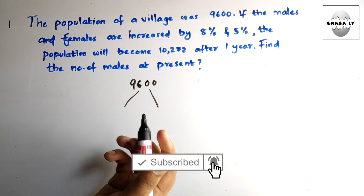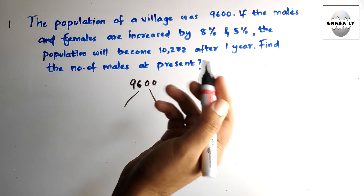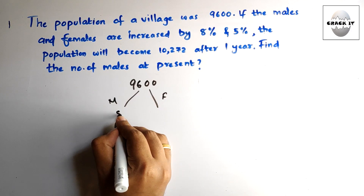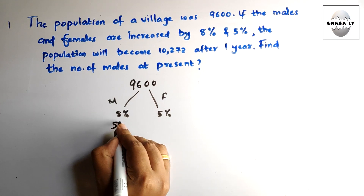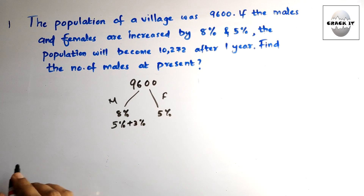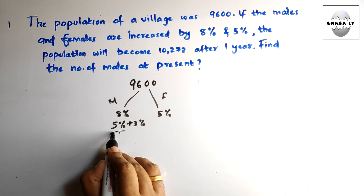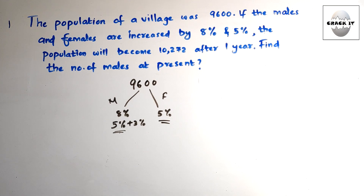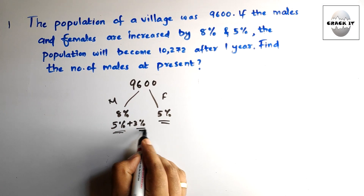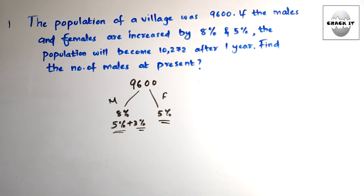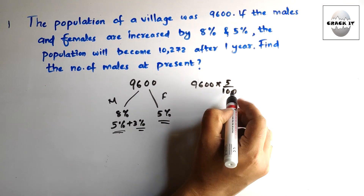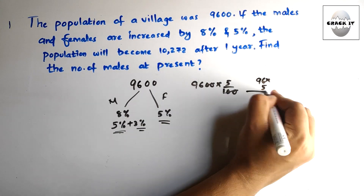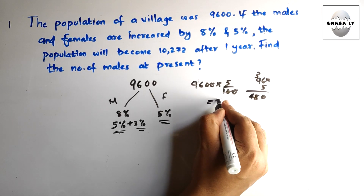Males increase by 8% and females by 5%. We write 8% as 5% + 3%, because 5% is common to both males and females. We can find the value for the common population first, then sort out the extra 3% for males. So 5% of 9600: the zeros cancel, and 96 × 5 = 480. So 5% of the total population is 480.